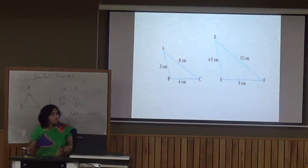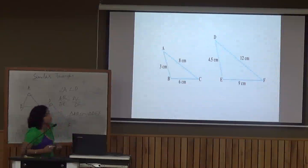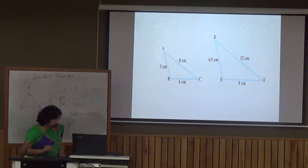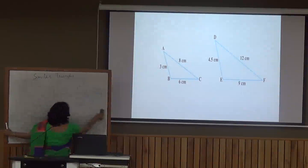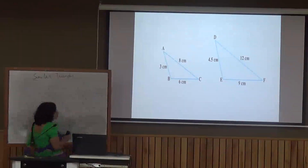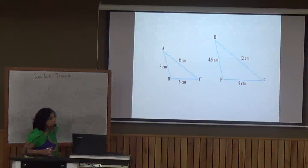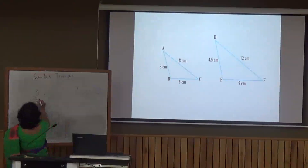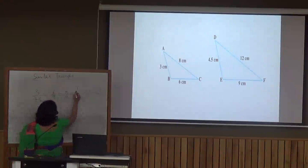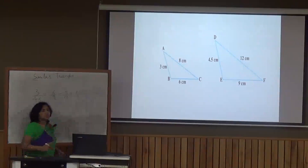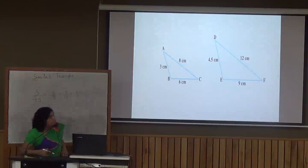Let's look at an example. We have to show that both triangles are similar. AB = 3 cm, DE = 4.5 cm; checking ratios: 3/4.5 = 6/9 = 8/12, all equivalent to 2/3. So the sides of both triangles are in the same ratio, and these two triangles are similar by the SSS criterion.